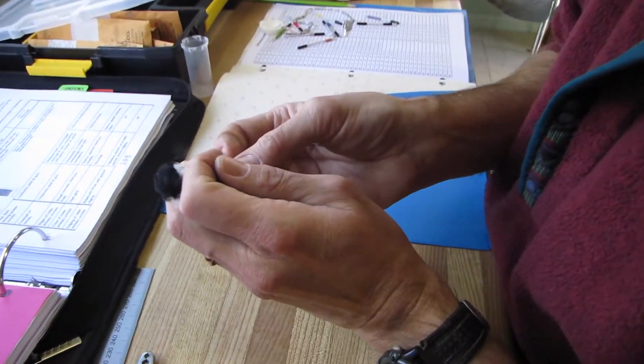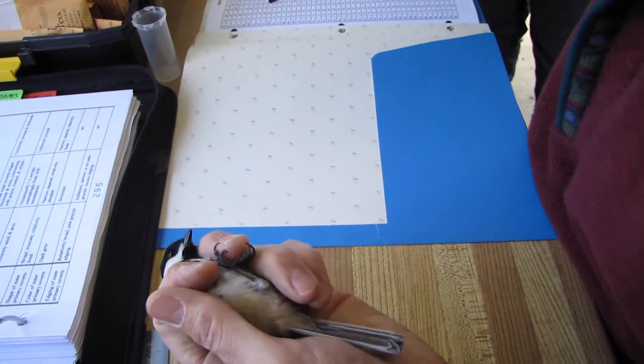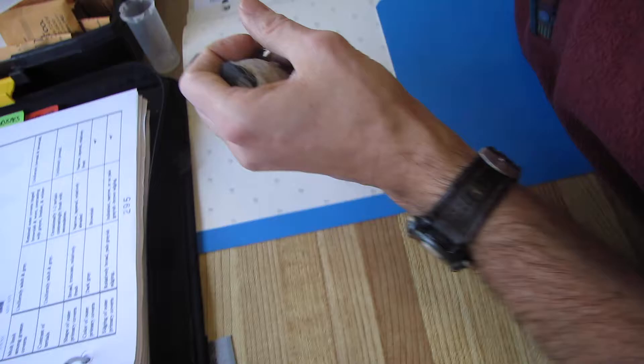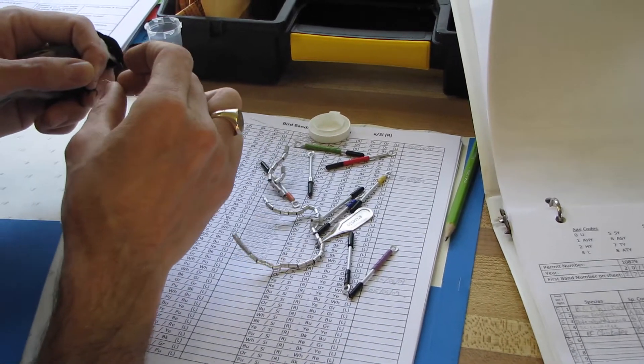There we go. We're holding it in the bander's grip, just like that. And we put on the silver band first. Environment Canada supplies the metal identification bands, and the records can be relayed back to them.